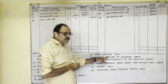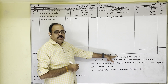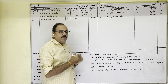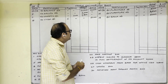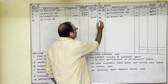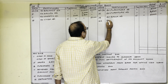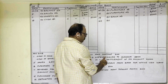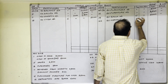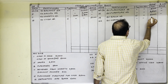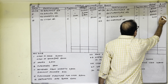22nd November: Paid cartage 400 rupees. Cash is going out from the firm — credit side cash column, 22nd date. Write the expenditure name: 'By Cartage account', 400 rupees in the cash column.